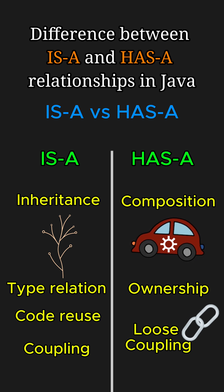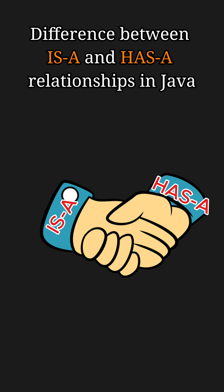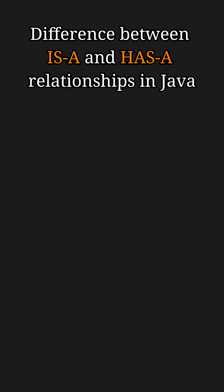To summarize, is-a relationships define inheritance and generalization, while has-a relationships define composition. Together, these relationships form the backbone of object-oriented programming. That's all for today — hit like and follow us for more Java tips.